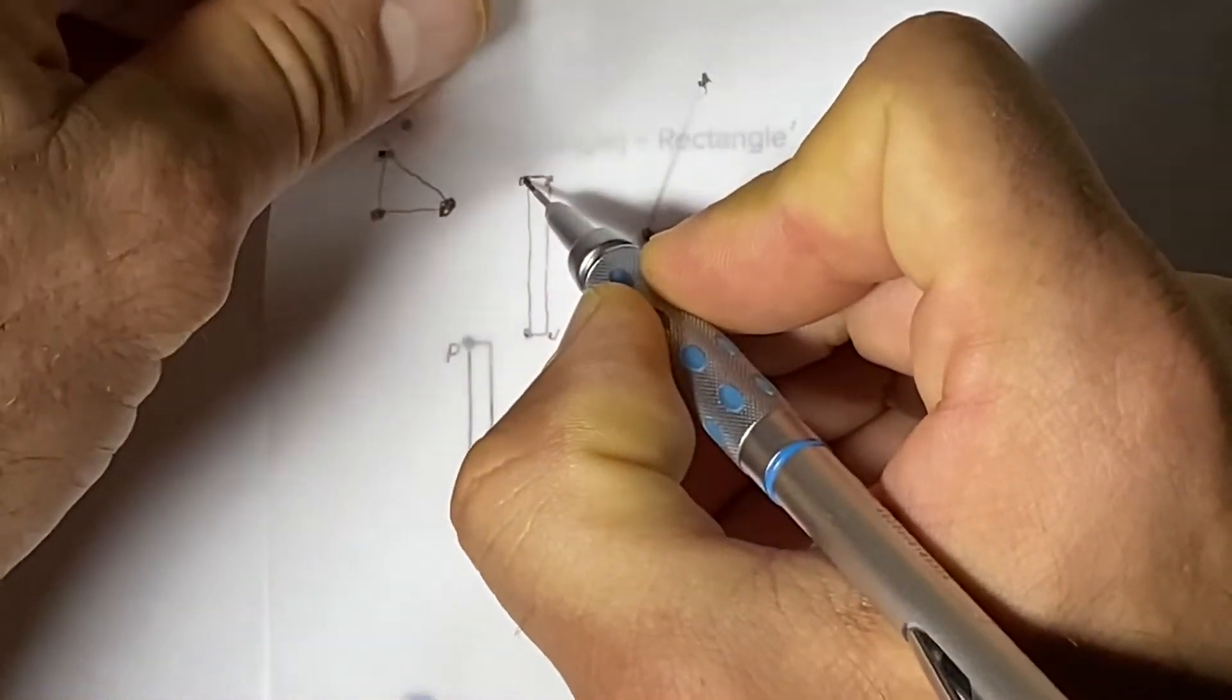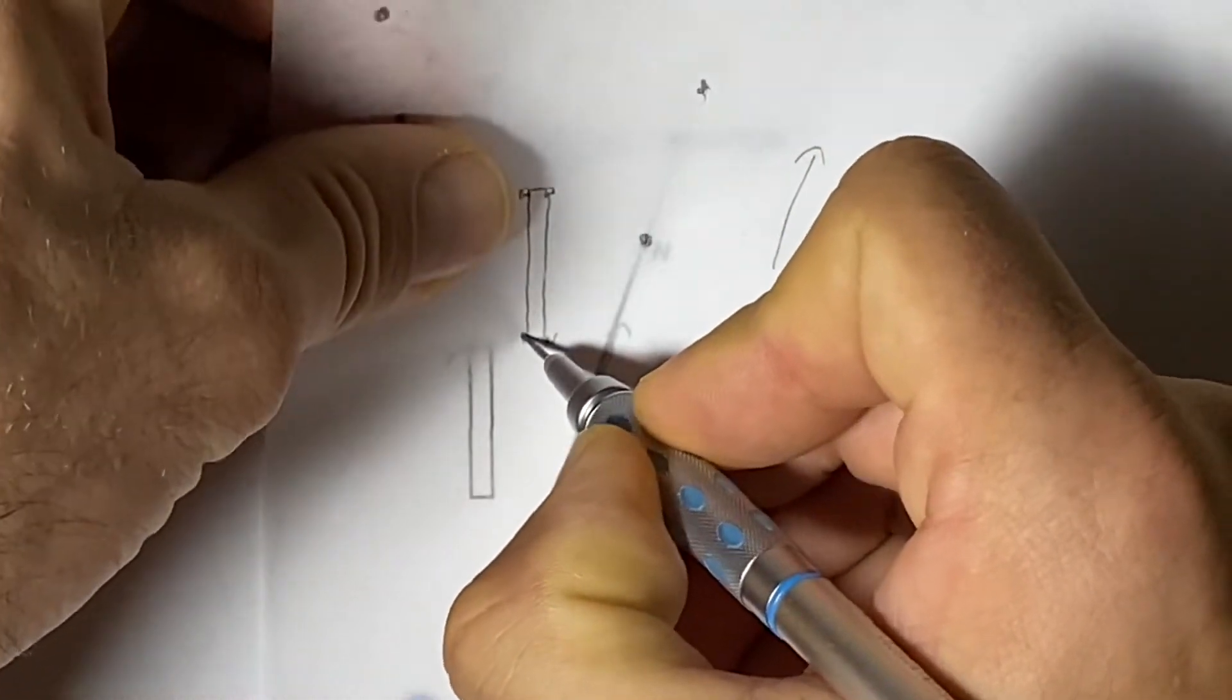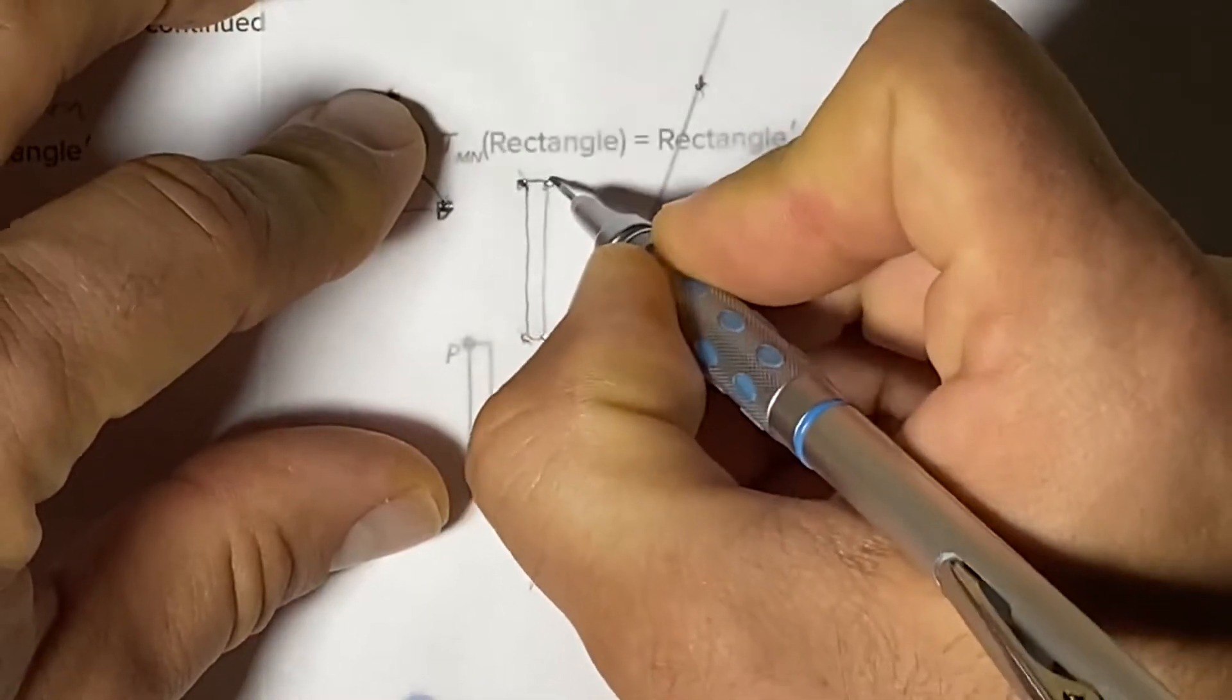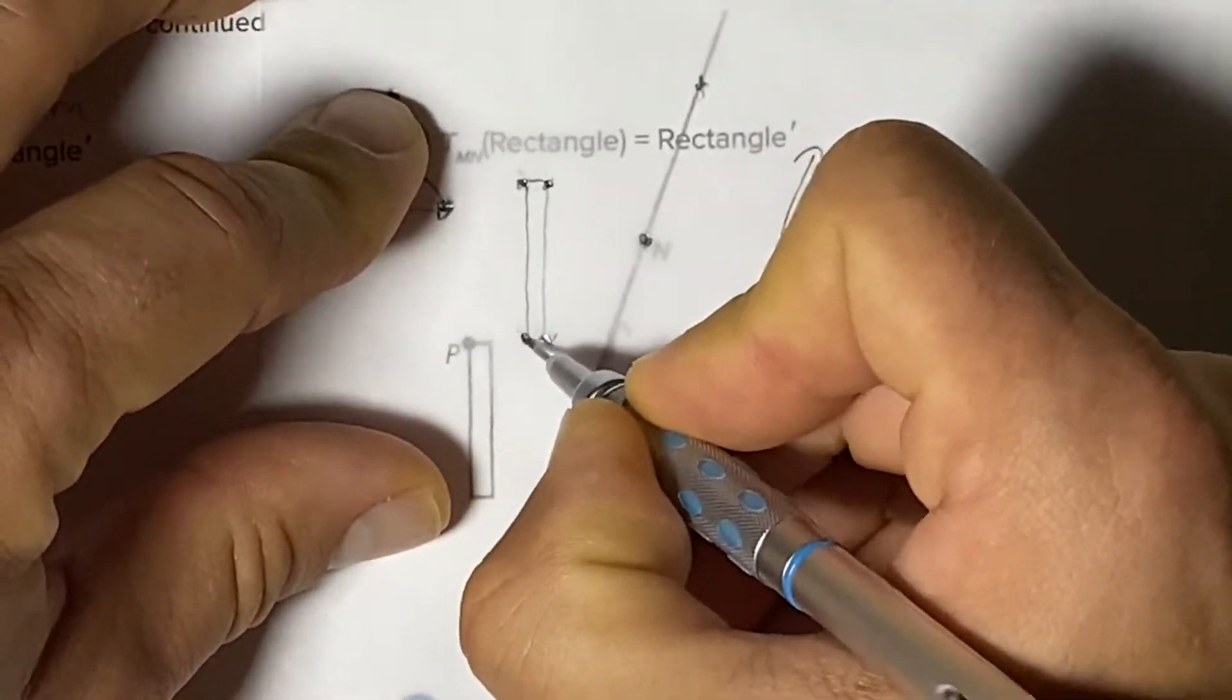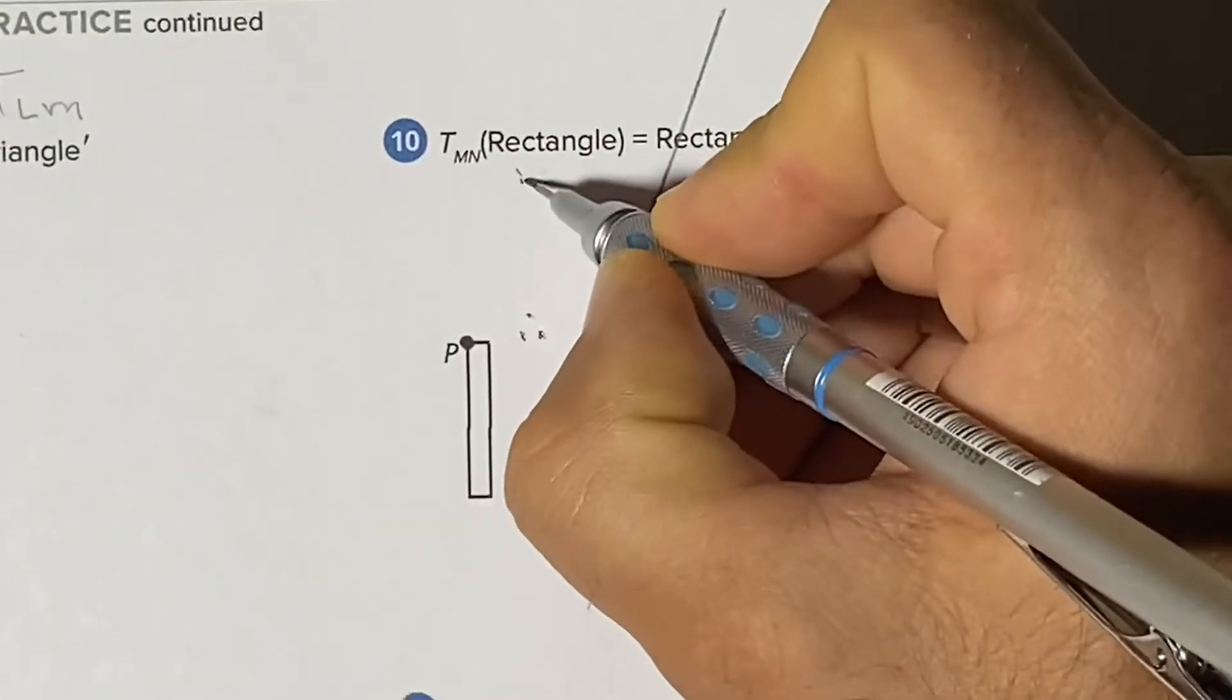And we can poke a hole through each corner and trace through the holes. Or we can go to the other side, color it in, and transfer it over that way.